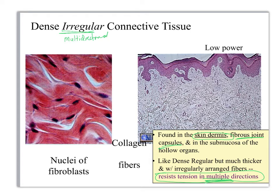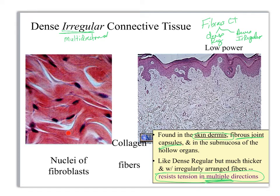Whenever you see people using the words in common English and they say 'fibrous CT,' it could be dense regular or it could be dense irregular. If we look at the fibers at really high magnification, what we're trying to show is that the fibers are not straight — fibers are going in multiple directions. Most of the time we are not looking at something at this magnification; we'd be looking at something like 40x.